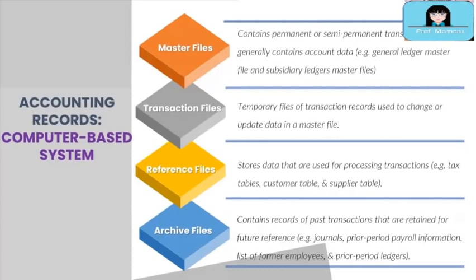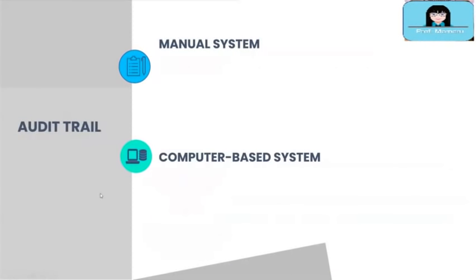Now you have an understanding of accounting records under both manual and computer-based systems. Let's discuss one of the important topics in accounting: the audit trail of the system. An audit trail is important because it is used to verify the reliability of information. Let us compare the audit trail between a manual system and a computer-based system.